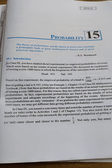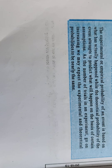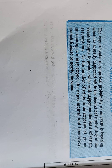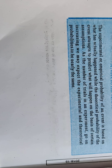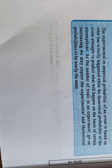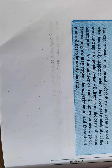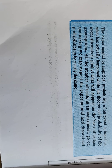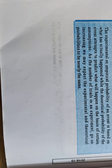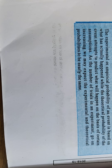The experimental or empirical probability of an event is based on what actually happens, while the theoretical probability of the event attempts to predict what will happen on the basis of certain assumptions. As the number of trials and experiments go on increasing, we expect the empirical and theoretical probability to be nearly the same.